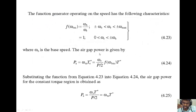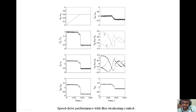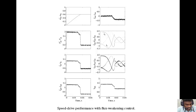The function generator operating on the speed has the following characteristics: f(omega_bm) equals omega_b (base speed) divided by reference speed, where reference speed is less than or equal to omega_base and less than or equal to plus or minus omega_max. The power developed by the machine is given by the product of omega_m and torque T. This is the simulated graph obtained during speed drive performance with flux weakening control. These machines are preferred with flux weakening control, whereas it is quite difficult to operate a PMSM in the flux weakening region, making it a critical stage for permanent magnet synchronous drives.